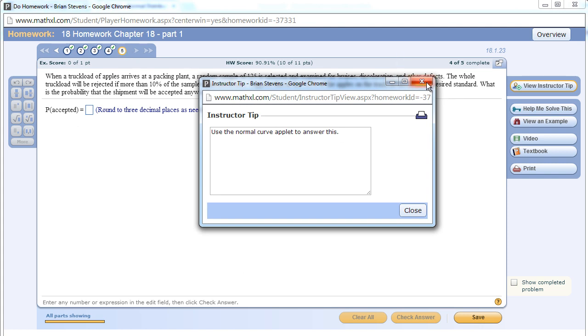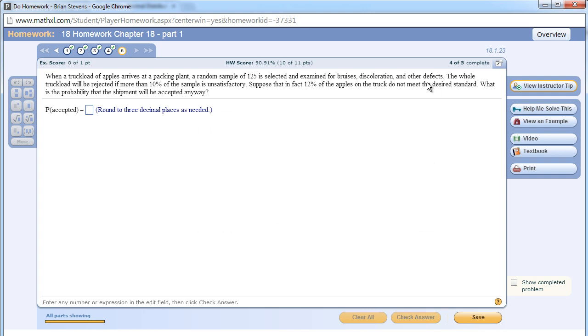This problem is one of my favorites. I think it's a good tough problem because it throws at you p-hat and p. Let's try to identify through this problem which one is p-hat and which one is p. Remember that p is for the population where p-hat is for the sample. When a truckload of apples arrives at a packing plant, a random sample of 125 is selected and examined for defects. The whole truckload will be rejected if more than 10% of the sample is unsatisfactory, and that would probably be p-hat. Suppose that in fact 12% of the apples on the truck are bad. That is p because that is the truth. P is the population proportion, the actual truth.